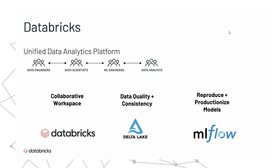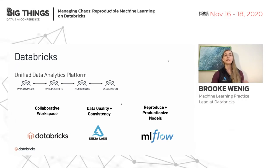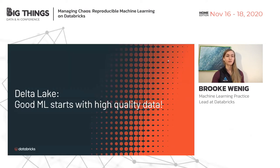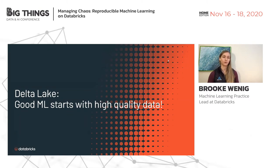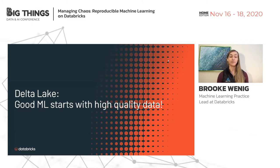Let's start with Delta Lake, because any good machine learning starts with high quality data. If you have noisy, ill-formed data, you're not going to build a good machine learning model. So we need to start with high quality data that we can trust.